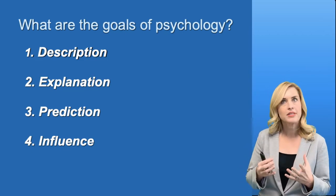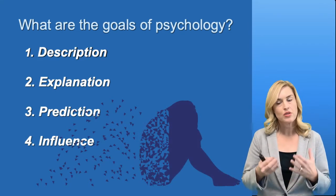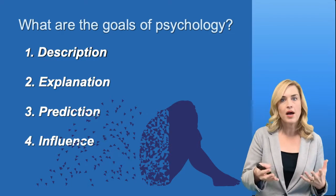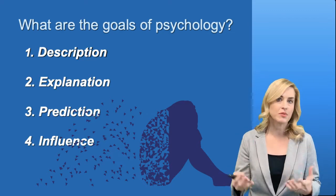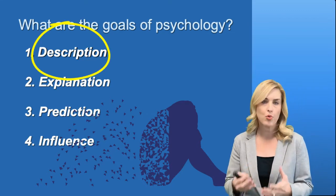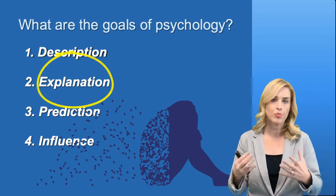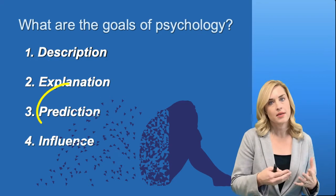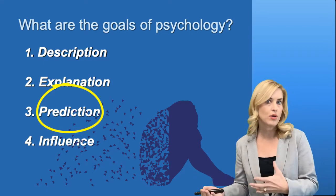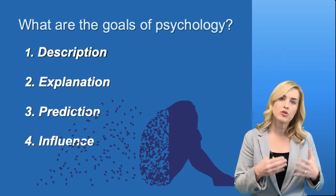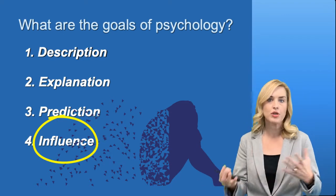So let's say we want to understand something like depression. We need to be able to describe it so that two clinicians discussing a client who may have this type of mental health issue understand what those symptoms might be. We want to be able to explain what happens with depression, and we also want to be able to predict it — is there a certain age at which we might see depression onset? We also want to be able to influence it.